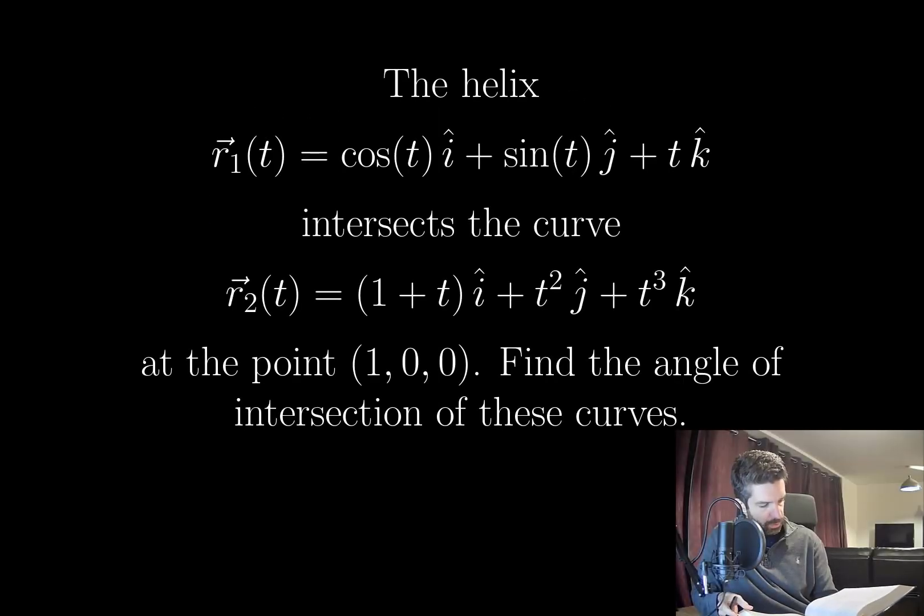The helix r1 of t equals cos t i plus sin t j plus t k intersects the curve r2 of t equals 1 plus t i plus t squared j plus t cubed k at the point (1,0,0). Find the angle of intersection of these curves.